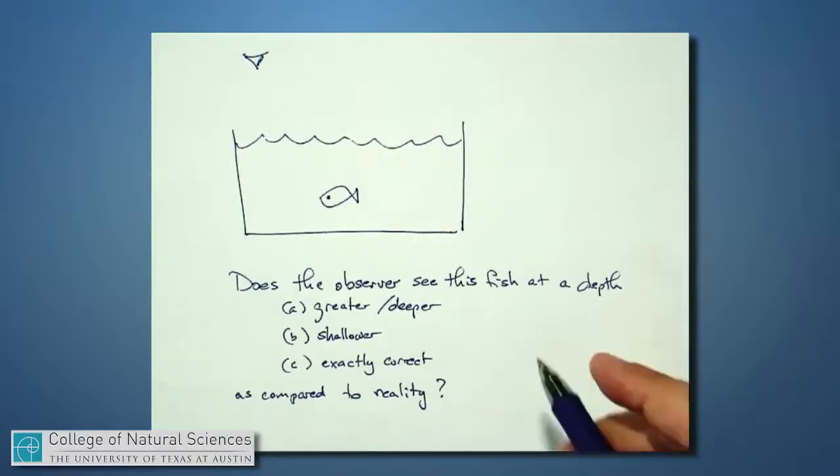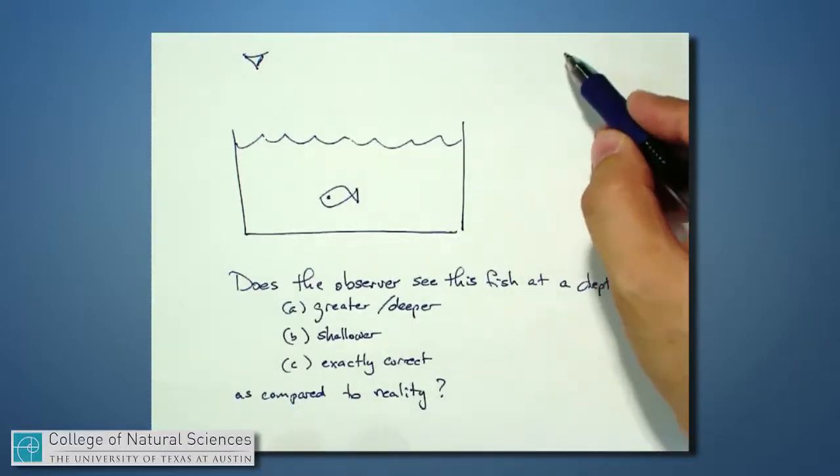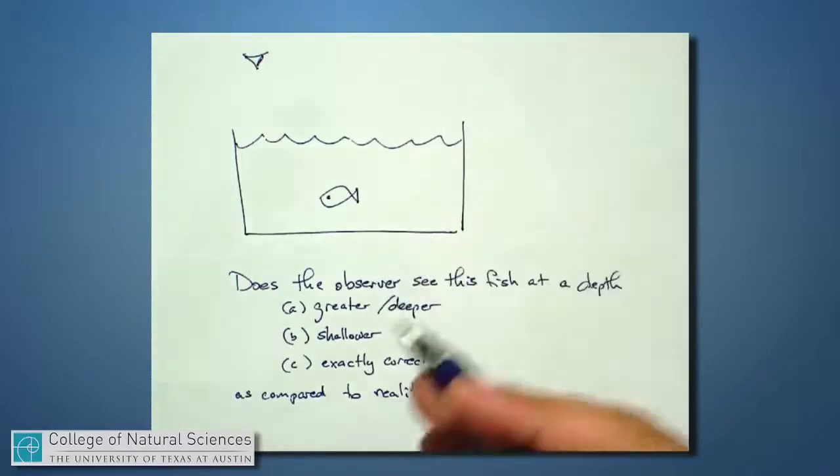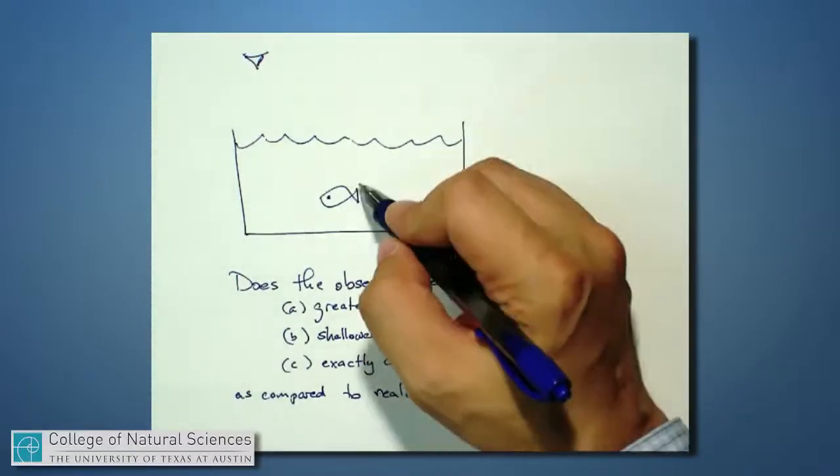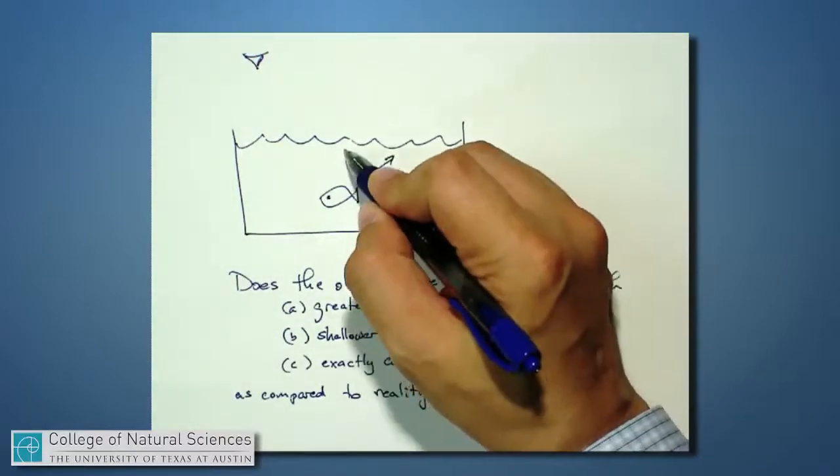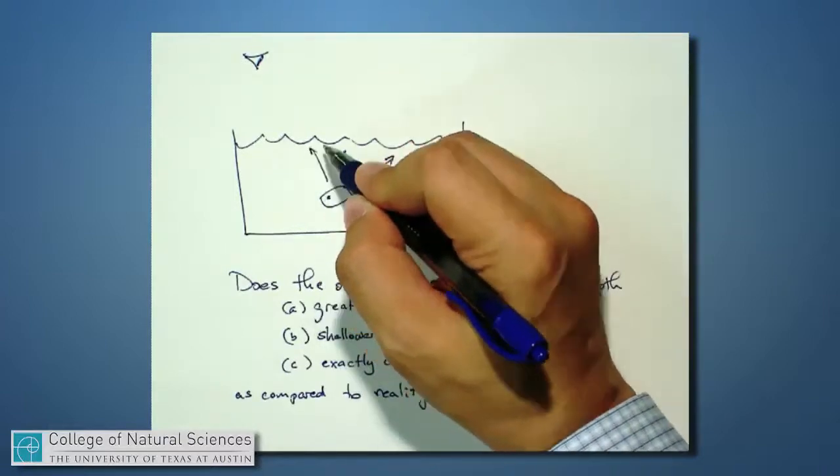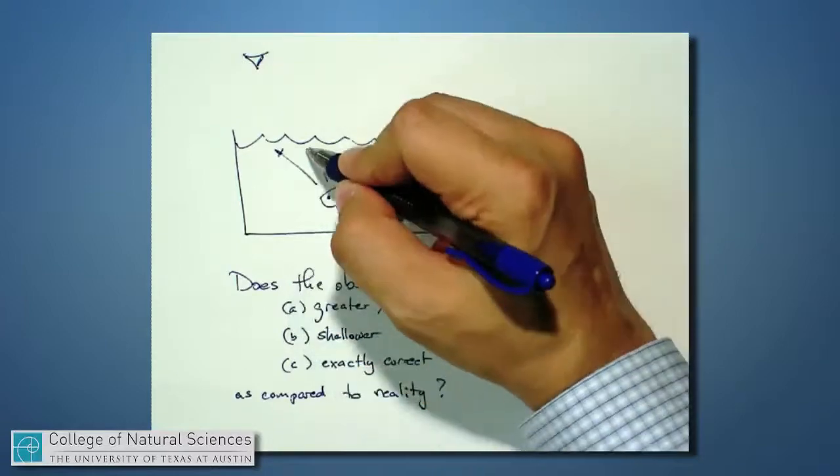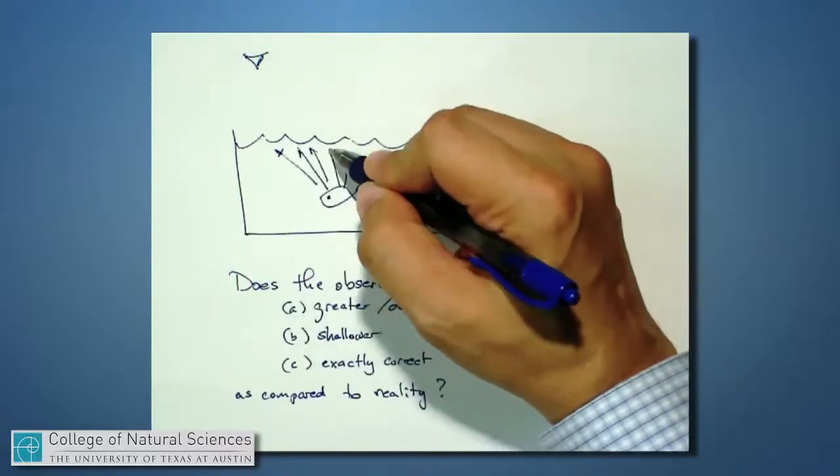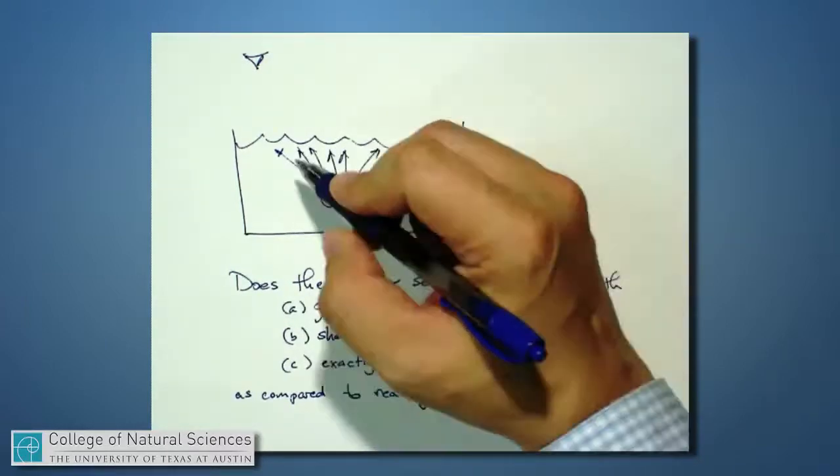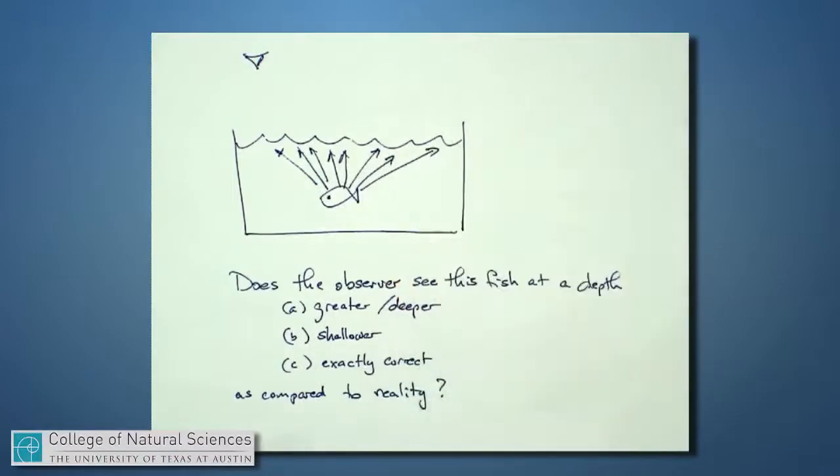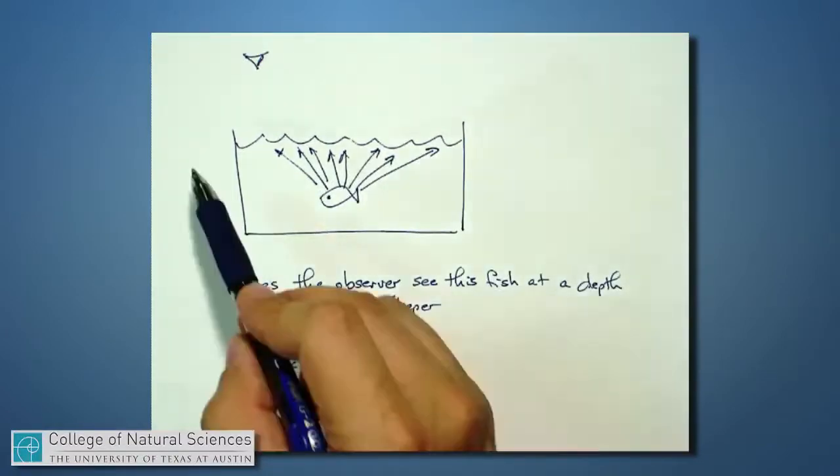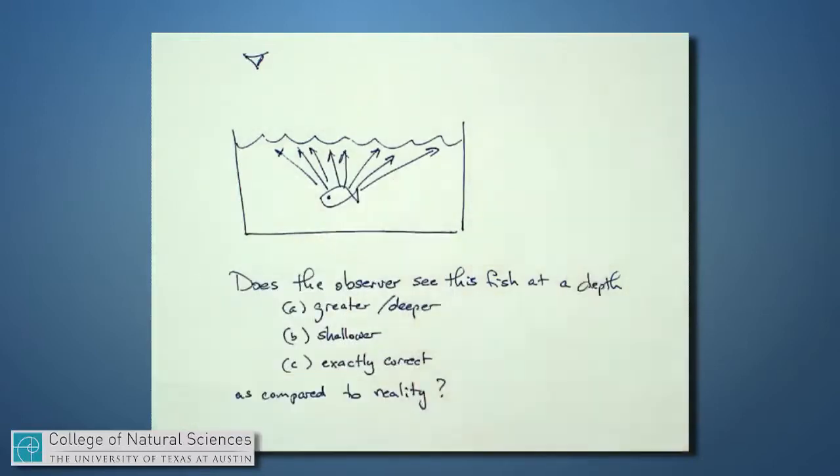It's best to think about a light source maybe off the side here, and it's shining light and reflecting light off of this fish. Light is traveling off the fish in all different directions because it is diffusely reflecting light. When the light reaches the surface of the water, I'm going to pretend that the water has a perfectly smooth surface at the top, although we know water is often a little bit choppy.